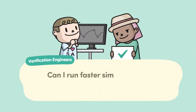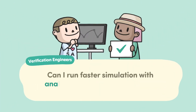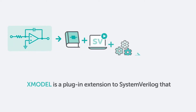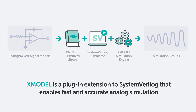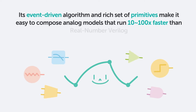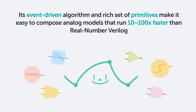Can I run faster simulations with analog models in SystemVerilog? Yes — Xmodel is a plug-in extension to SystemVerilog that enables fast and accurate analog simulation. Its event-driven algorithm and rich set of primitives make it easy to compose analog models that run 10 to 100 times faster than real-number Verilog.